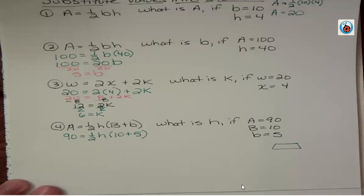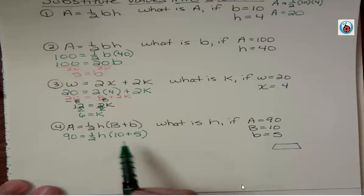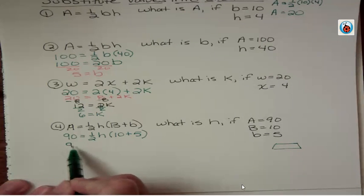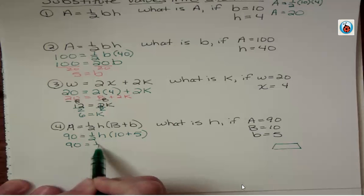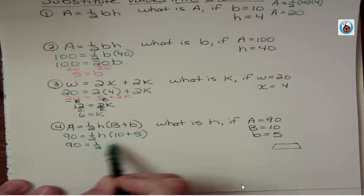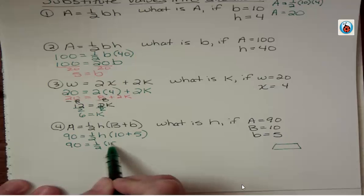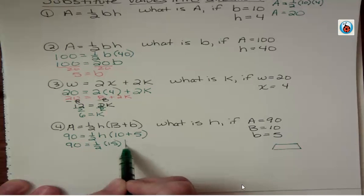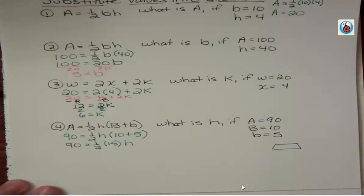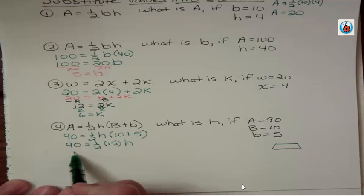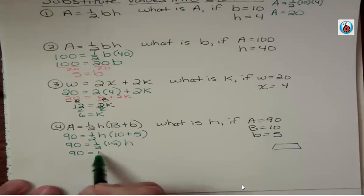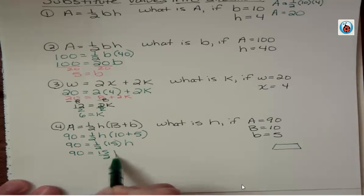Now solve by adding the two bases together, simplifying inside the parentheses. 10 + 5 = 15. Then we have 1/2 times 15—I'm not going to make that a decimal, just call it 15/2 h. So 90 = 15/2 h. This has a tricky fraction, but overall not that hard.